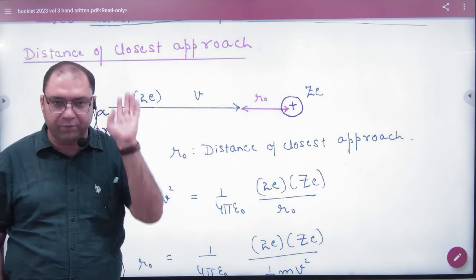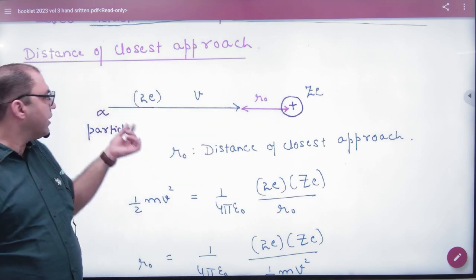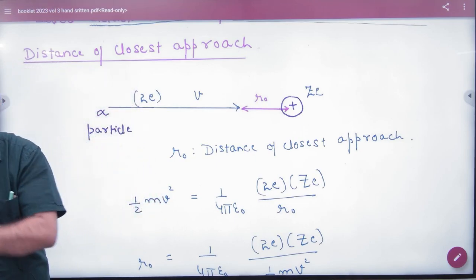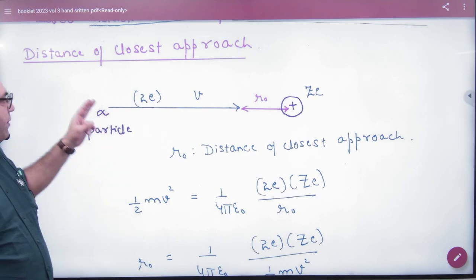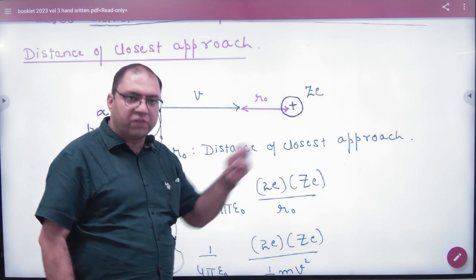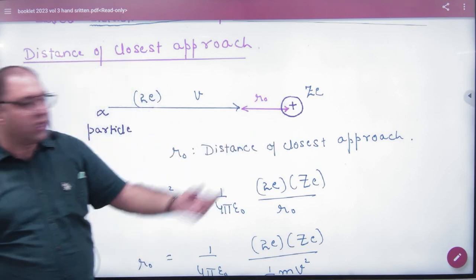I made a nucleus, positive charge. Alpha particle plus 2e. So alpha particle comes with v velocity and then it goes back due to energy.